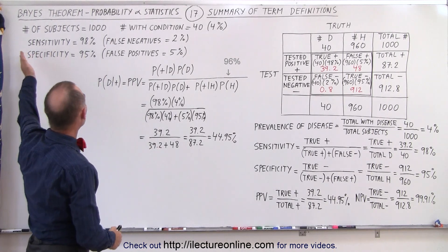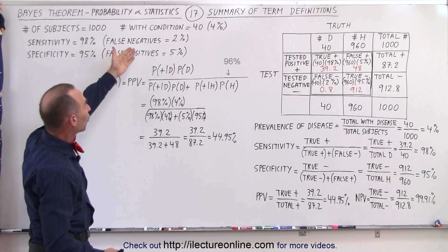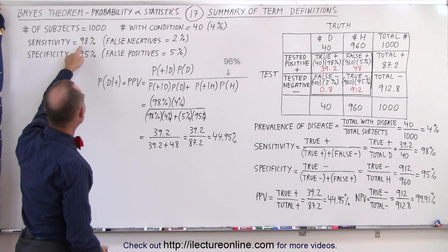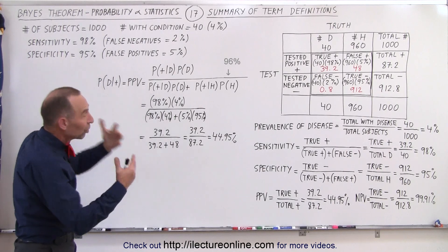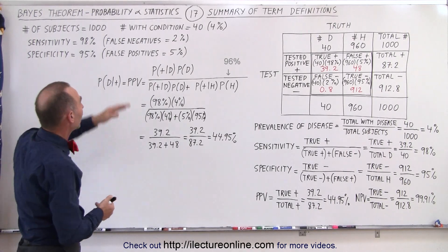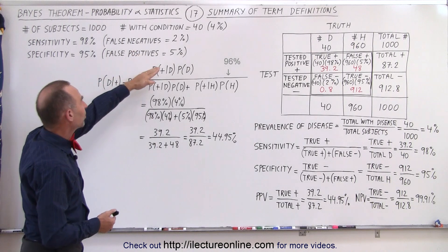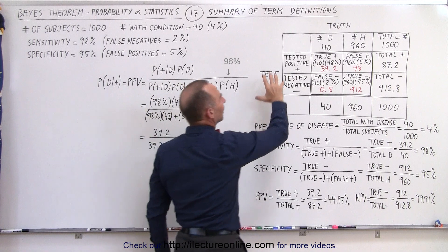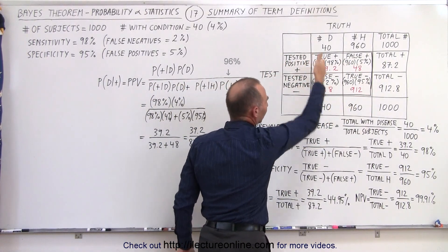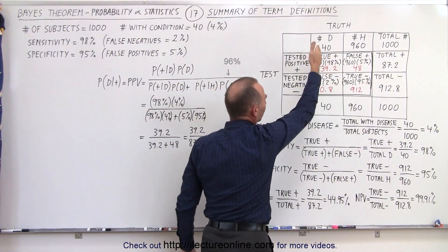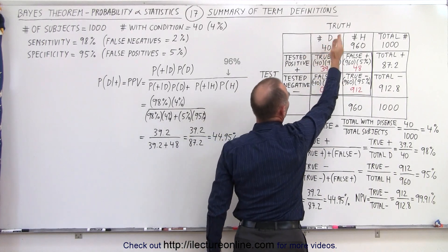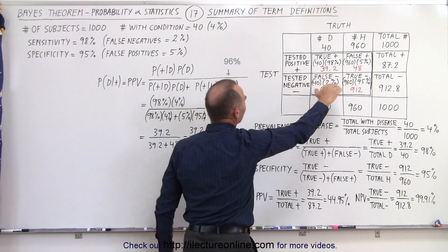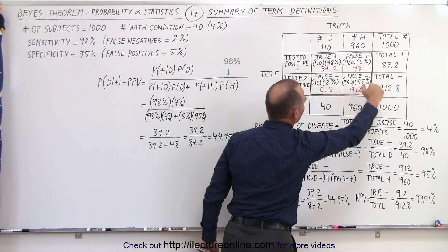We start with the same concept: 1,000 subjects, 40 of them with the condition, which is 4% of them. We have a test with a sensitivity of 98% and a specificity of 95%, indicating a 2% probability of false negatives and a 5% probability of false positives. The table shows true conditions on the vertical columns — 40 have the condition and 960 are healthy — and positive and negative tests on the horizontal lines.